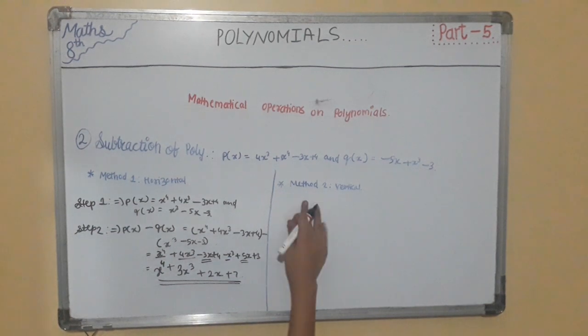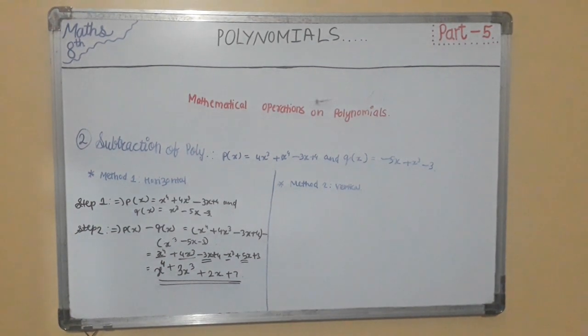Now we will move to the vertical method. Arrange the polynomials with the like terms one below the other in the same column and add them after changing the signs of the polynomial to be subtracted.